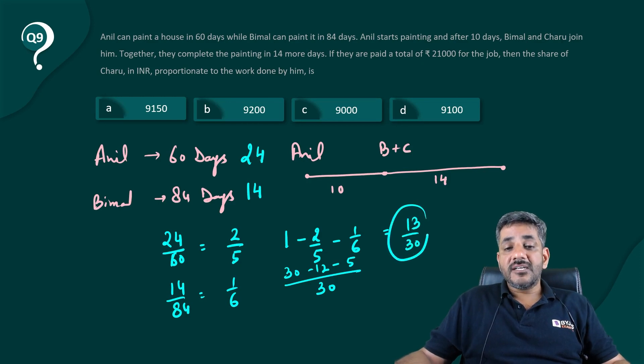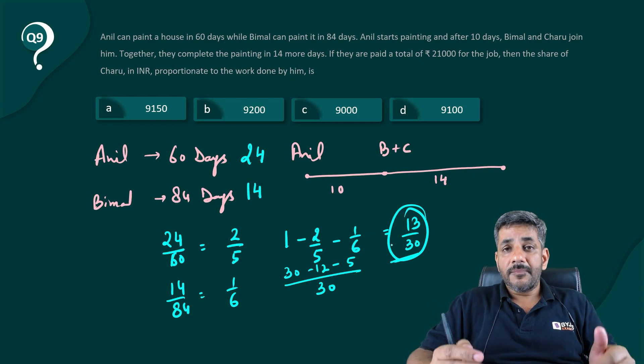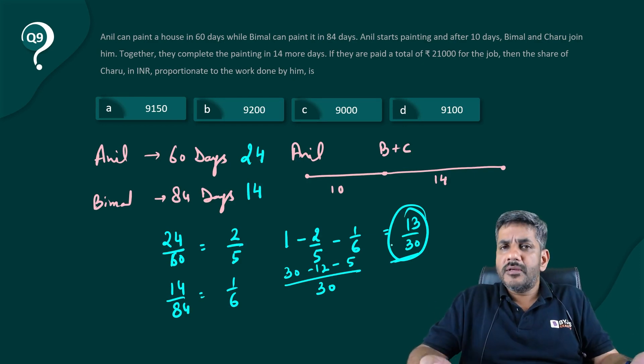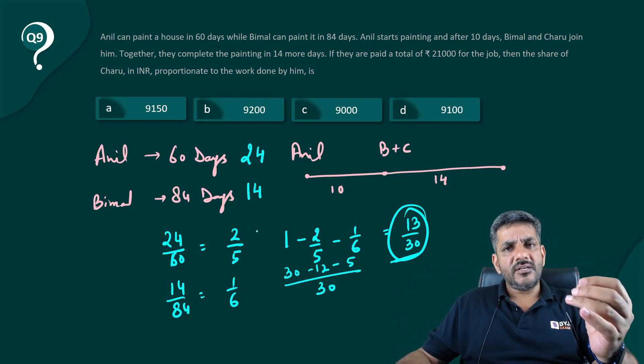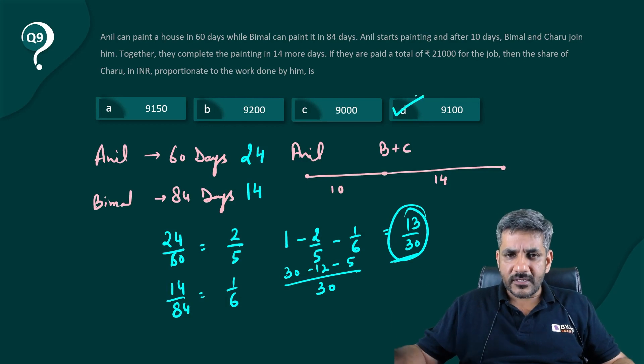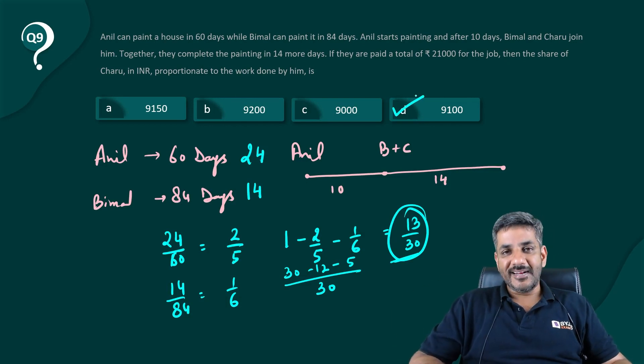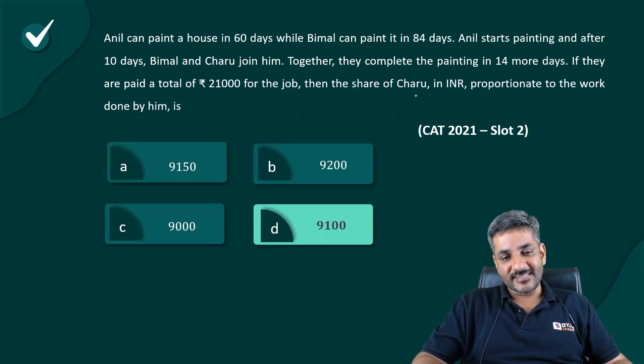And if Charu has done 13 by 30 of the work, the money given to Charu would also be 13 by 30 of total. You don't have to calculate completely. 13 by 30 of something has to be a multiple of 13. The only option among all four of them is 9100, and that's the right answer for us.